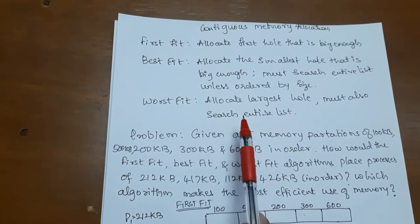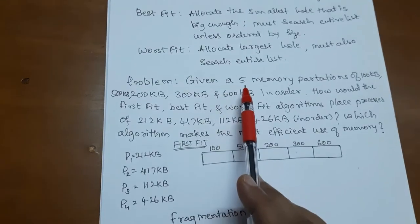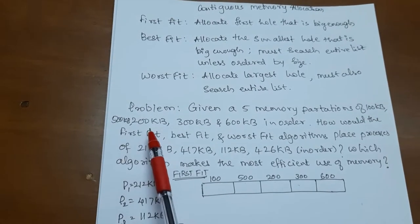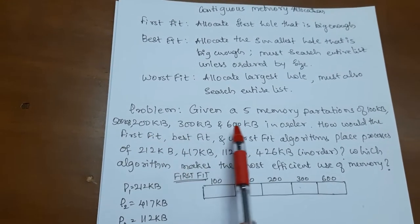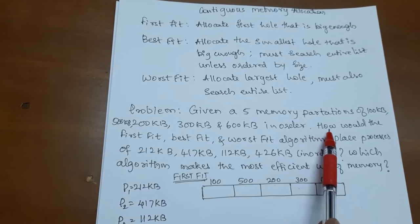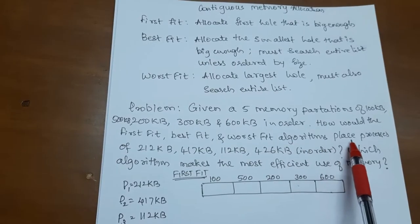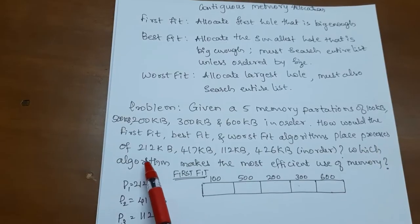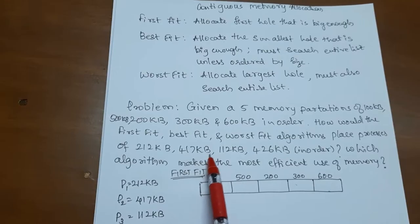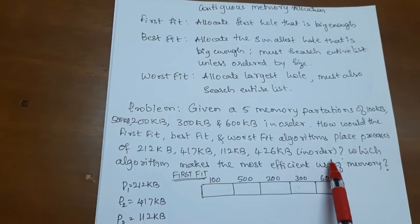Now to see the allocation of these three methods, we will consider one problem. Here five memory partitions of size 100 KB, 500 KB, 200 KB, 300 KB, and 600 KB are considered. The question is how would the first fit, best fit, and worst fit algorithms place the four processes of size 200 KB, 470 KB, 100 KB, and 426 KB in order.